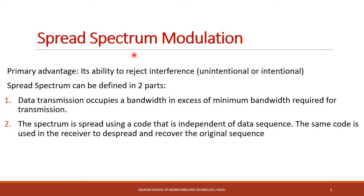Spread spectrum communication is a kind of secure communication. This means that the data is transmitted in such a way that it is not detected or interrupted by an unauthorized third party. The primary advantage of spread spectrum communication is its ability to reject interference. Interference can be unintentional by another user transmitting simultaneously through the same channel, or intentional by a hostile transmitter attempting to disrupt transmission. Spread spectrum can be defined in two parts.